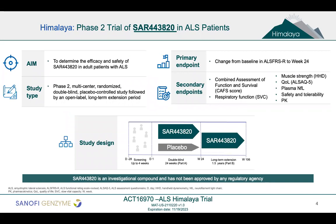A few words on the Himalaya trial. It's a phase two trial of SAR 443820 in ALS patients. The overall goal is to determine the safety and efficacy of this compound in people with ALS. After a 28-day or four-week screening, patients are randomized to either the RIP-K1 inhibitor or placebo in a two-to-one randomization ratio for 24 weeks. After that, all patients who finish the study will be eligible to join a long-term extension study for up to a year and a half — an open-label extension after the double-blind period.